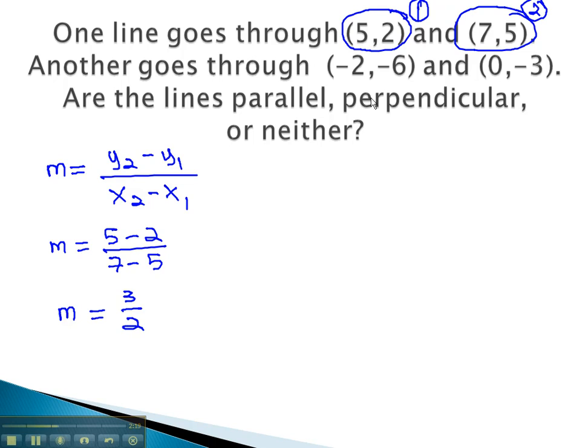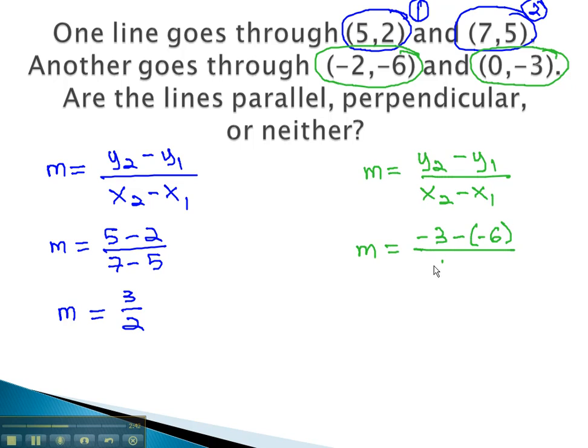Let's consider the second line to see how it compares. The second line goes through the points (-2,6) and (0,-3). We will find the slope by doing, again, y2 minus y1 over x2 minus x1. Y2 is negative 3, minus y1, which is negative 6, over x2, which is 0, minus x1, which is negative 2. Subtracting a negative is the same as adding a positive, and so we find our slope is 3 halves.